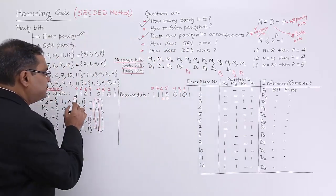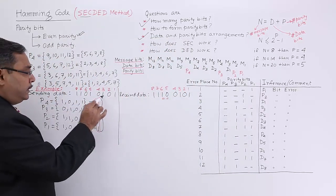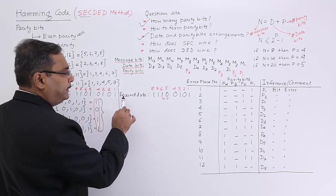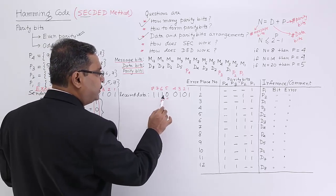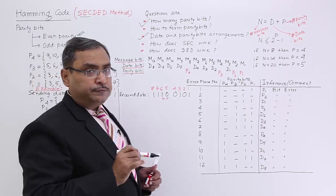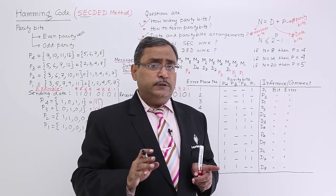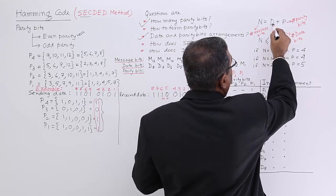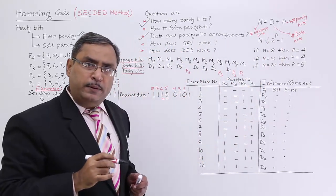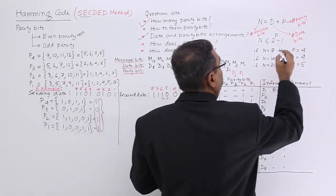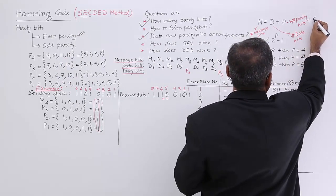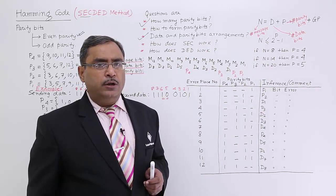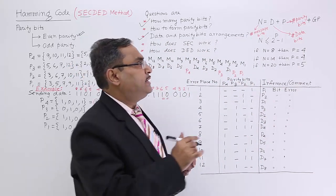Let us suppose this is my sent data. The respective parity bits are already calculated in my prior video and this is my received data where two bits have got corrupted. In case of SECD, we send d number of data bits, p number of parity bits, and also send another bit which is the general parity bit calculated on this data.